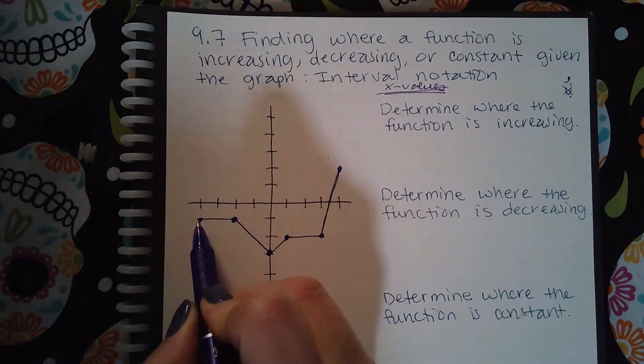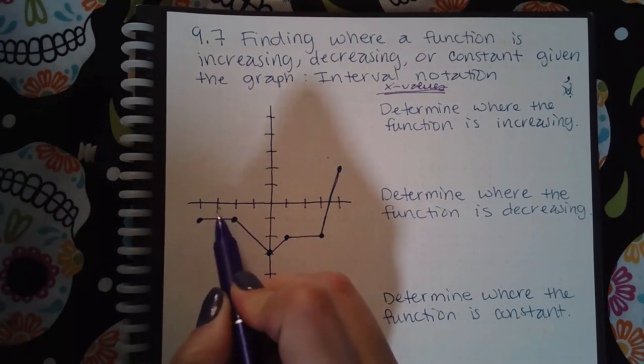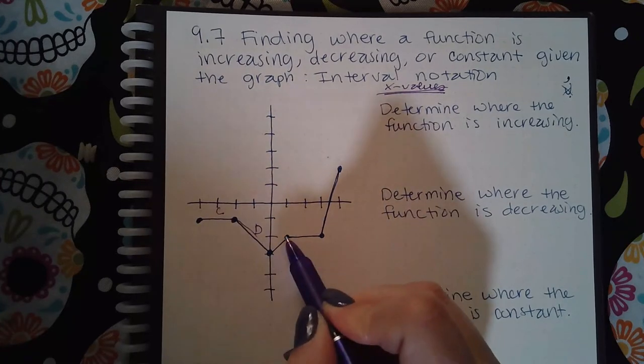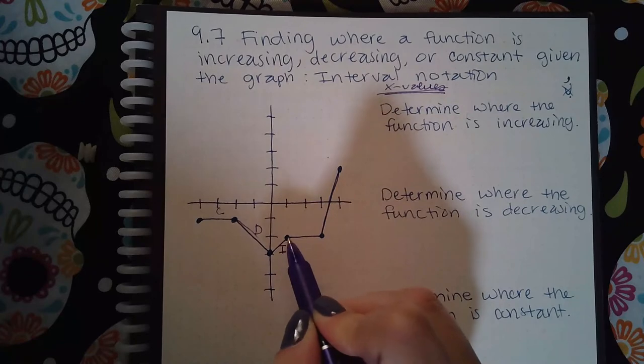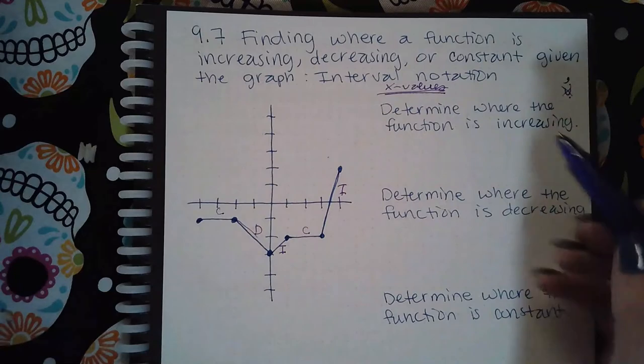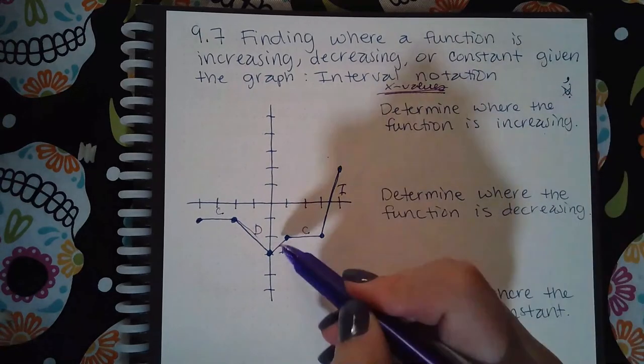If I start all the way to the left, because you do have to read from left to right, if I'm here this is constant, then I'm going downward which means it's decreasing, then I'm going upward which means this part is increasing, then I'm constant again, and then I'm increasing again.